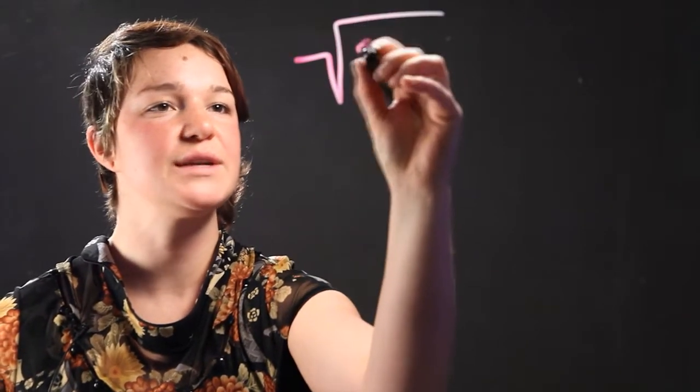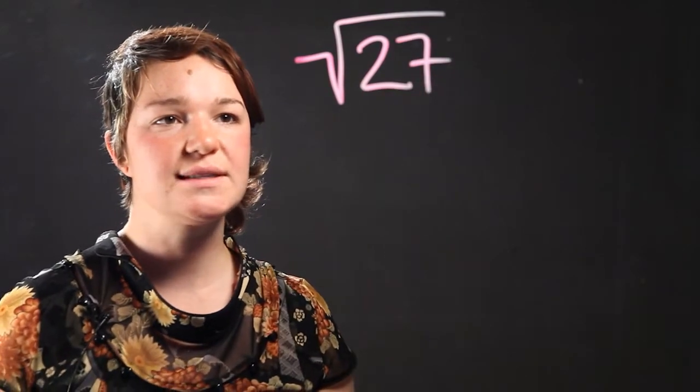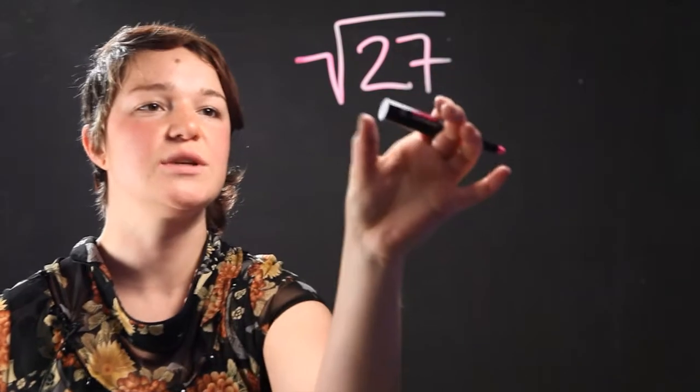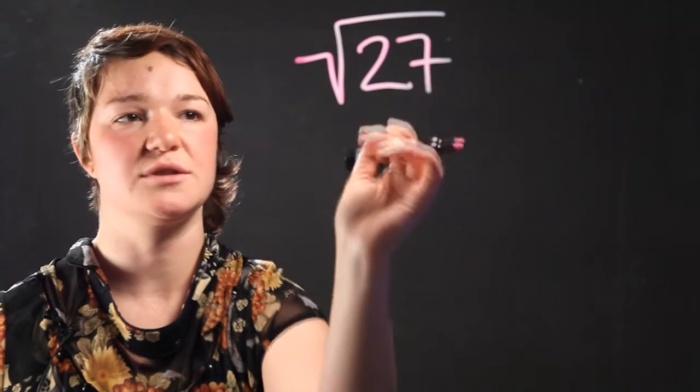So let's start with a radical. We'll do a simple one at first. We're going to do square root of 27. So in order to simplify this, we need to know what 27 is equal to.